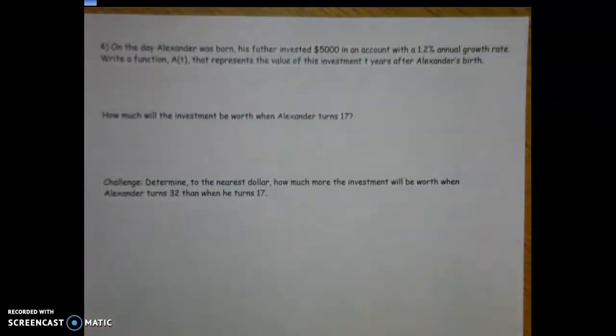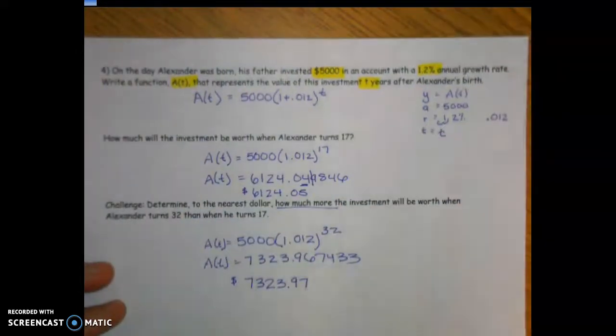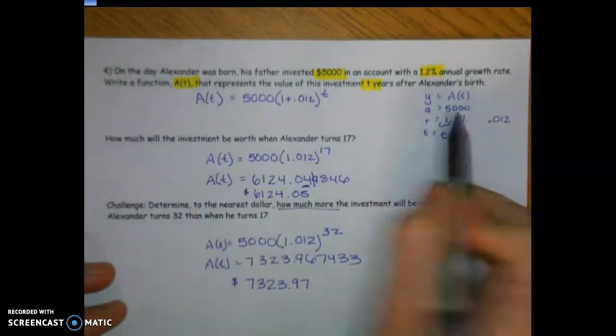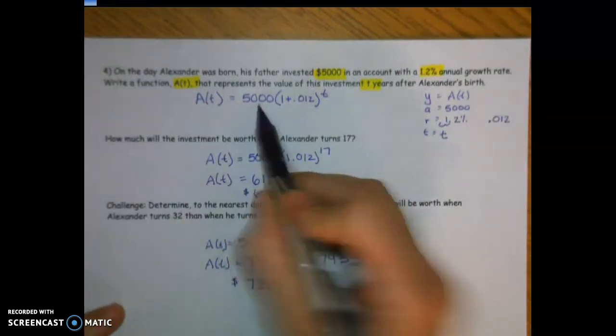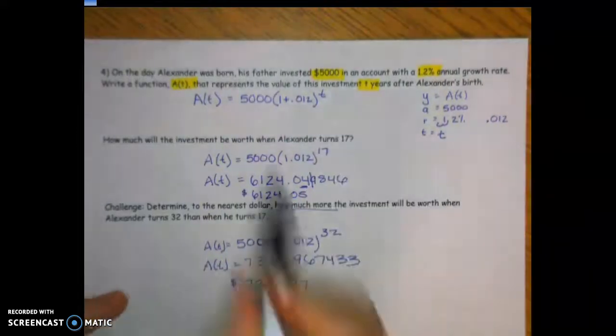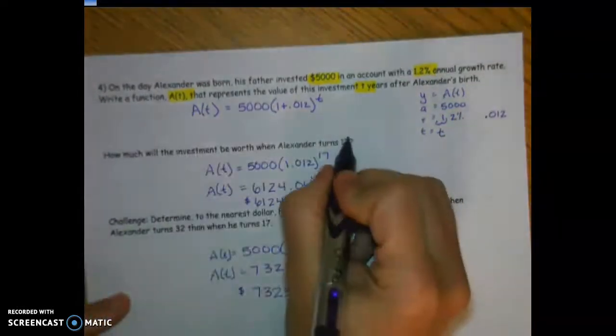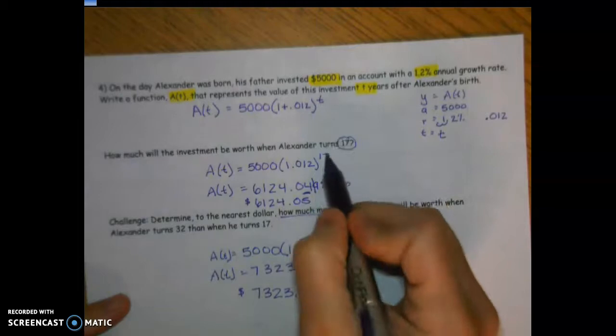Let's turn the page and try one more. I'll pause and put the answers up for you to check. For this example, they first ask for just a function: a(t) = 5000(1 + 0.12)^t. The initial value is $5,000, r = 0.12, and since no specific time is given yet, I left it as t. Then they ask to evaluate when he turns 17, so I substitute t = 17.